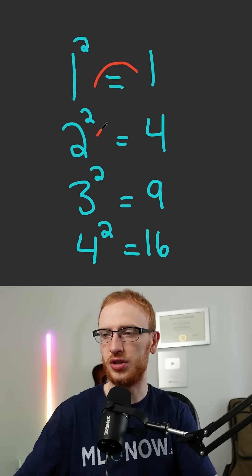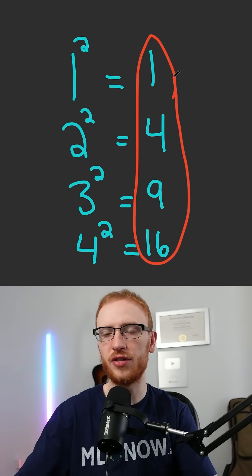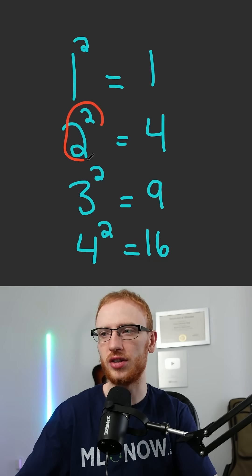So 1 squared is 1, 2 squared is 4, and so on. All of these numbers here are called perfect squares because they are squares of an integer.